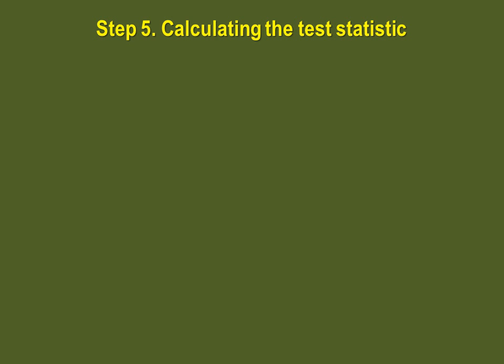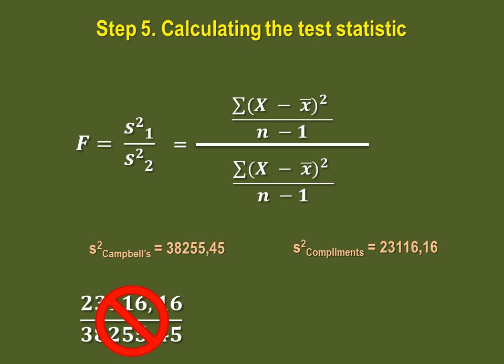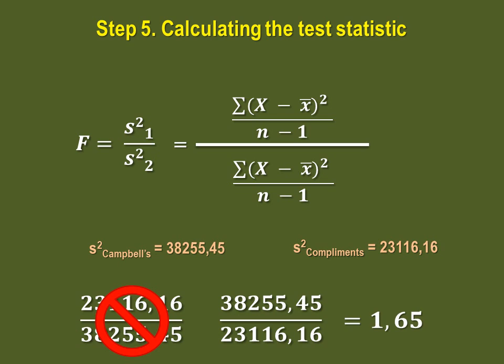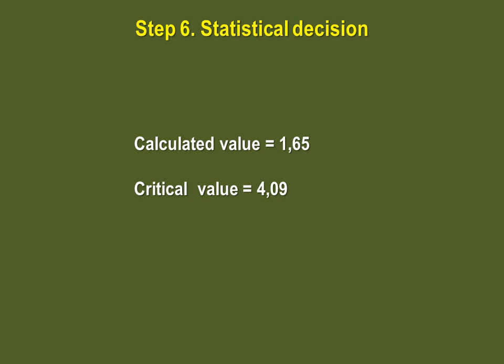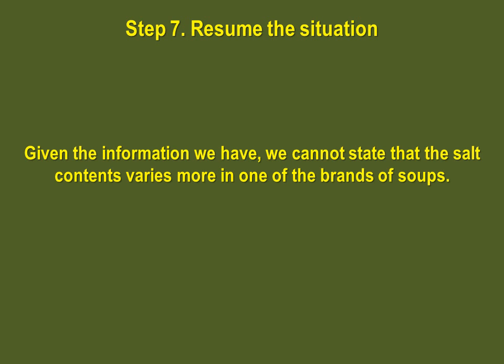It's now time to calculate our F value. The equation is one variance divided by another. We've already been through the method for calculating variances, so here are the variances for salt content for both soups. Remember that we divide the highest variance by the lowest, which gives us an F value of 1.65. Because our calculated value of 1.65 is lower than our critical value of 4.03, we do not reject the null hypothesis. This means we cannot say that the salt content varies more in one brand of soup than the other.